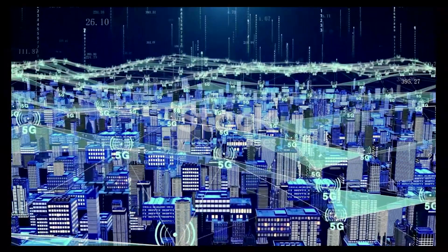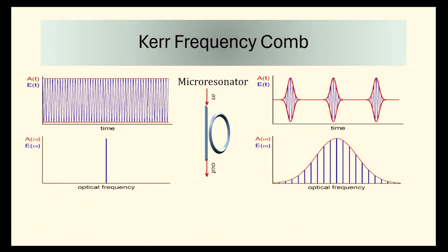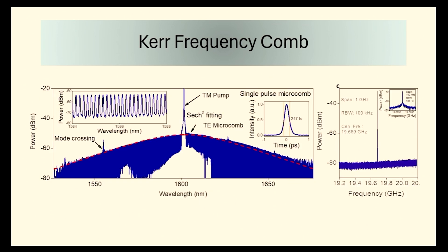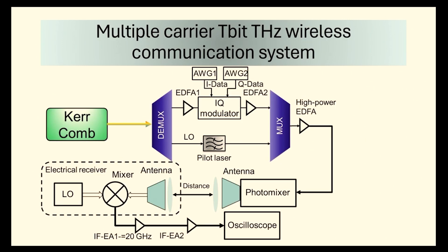We present a terahertz wireless communication system based on chip-scale Kerr-frequency comb and broadband terahertz photomixer. Optical frequency combs are unique light sources that coherently link optical frequencies with microwave signals. In the time domain, it's an optical pulse train containing multiple frequency components in the frequency domain with a certain frequency separation. The Kerr-frequency comb is generated by optically pumping an ultra-high-Q micro-resonator. The generated Kerr combs are injected into a broadband terahertz photomixer for generating multiple terahertz carriers. Finally, the optically modulated data signal is moved into the baseband by two-stage heterodyne mixing. The generated terahertz frequency can span from 300 GHz to 3 THz, covering all atmospheric transparent windows of terahertz wireless communication.